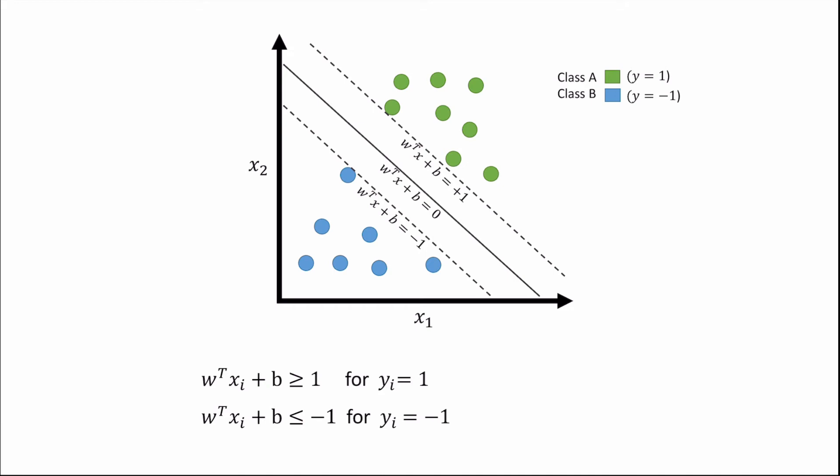and predict a value of y equals minus 1 if any data point lies beyond this margin here. So essentially what we want is that our hyperplane outputs a value bigger than or equal to 1 if our data point xi belongs to class A, that is yi equals to 1, and for our hyperplane to output a value less than or equal to minus 1 if our data point xi belongs into class B, that is yi equals to minus 1.